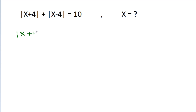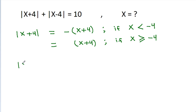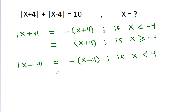So |x + 4| will be equal to -(x + 4) if x is less than -4, and it will be equal to x + 4 if x is greater than or equal to -4. And |x - 4| will be equal to -(x - 4) if x is less than 4, and it will be equal to x - 4 if x is greater than or equal to 4.